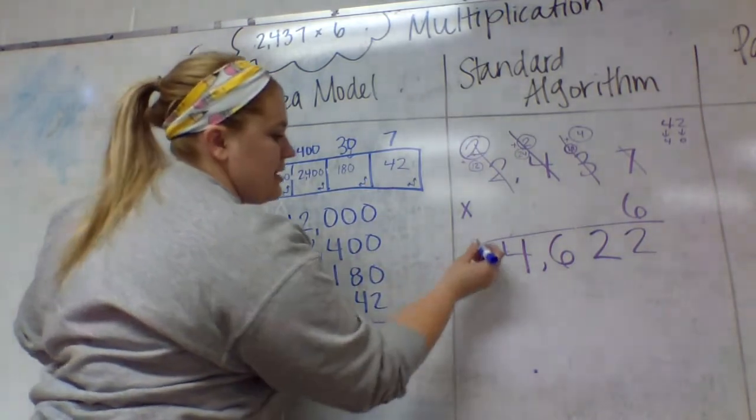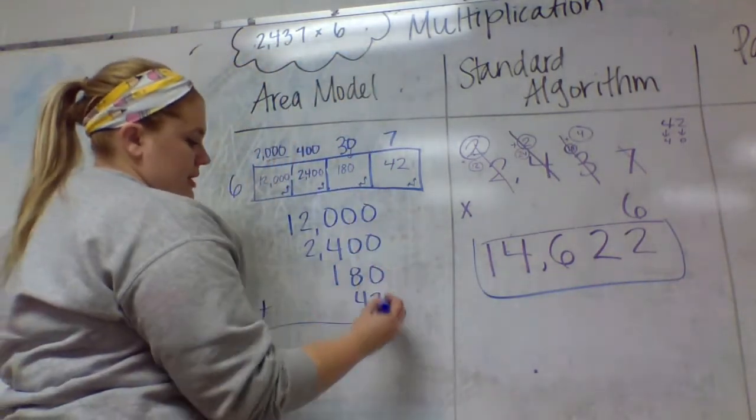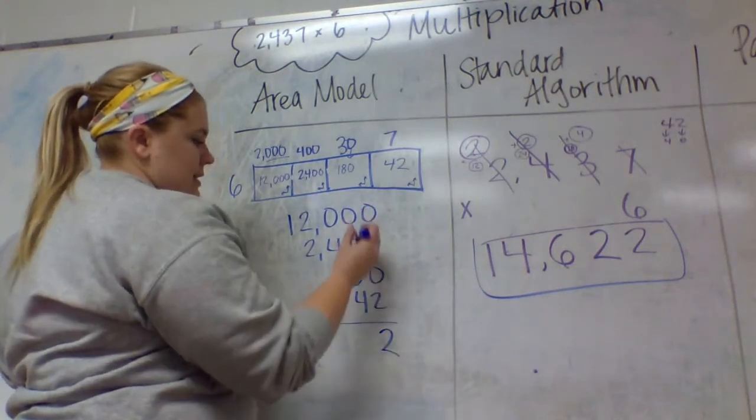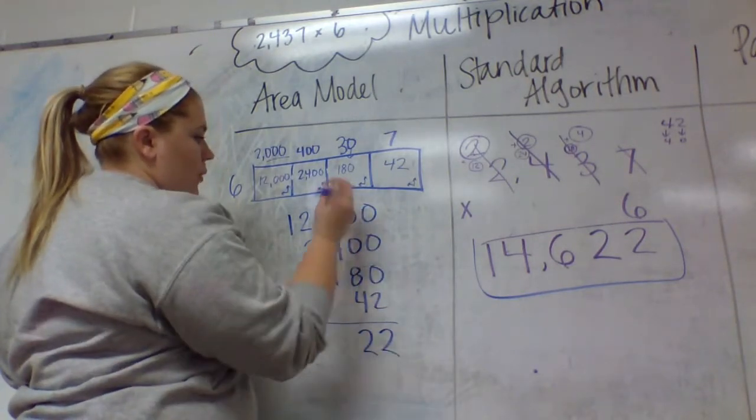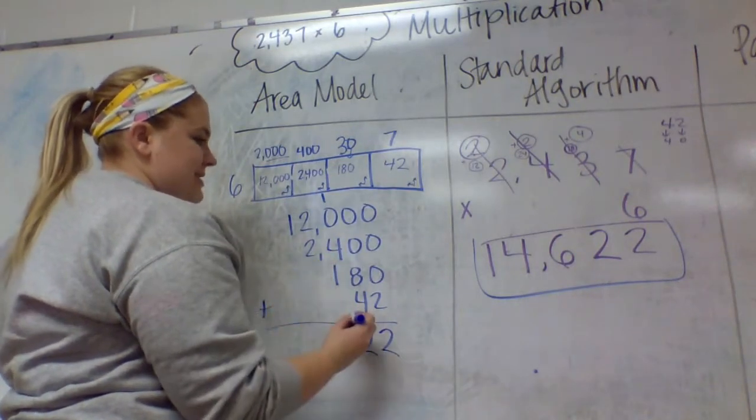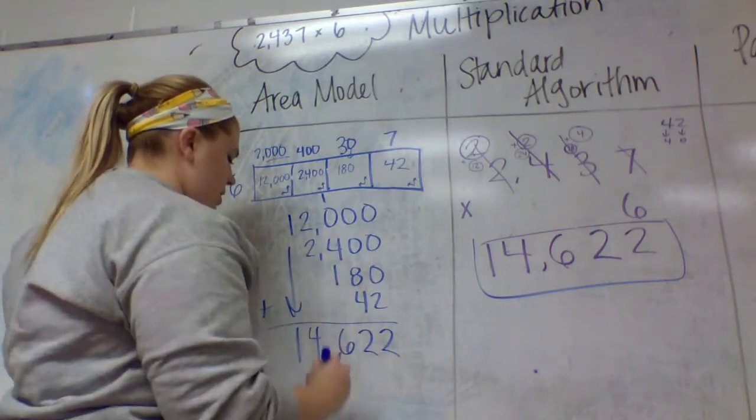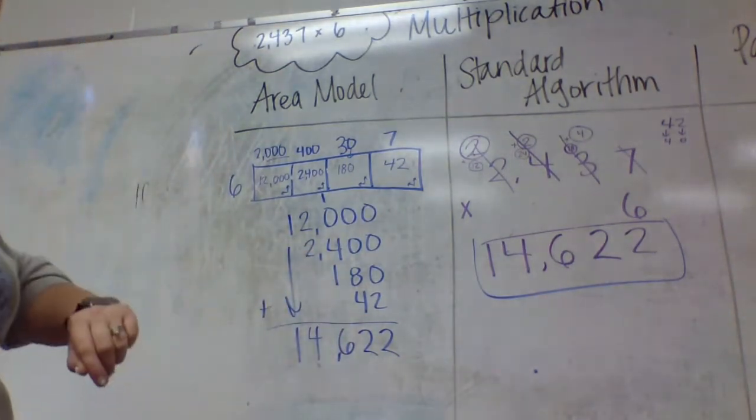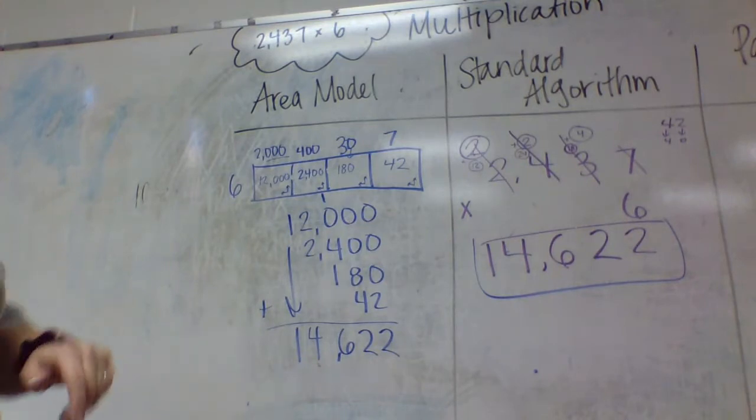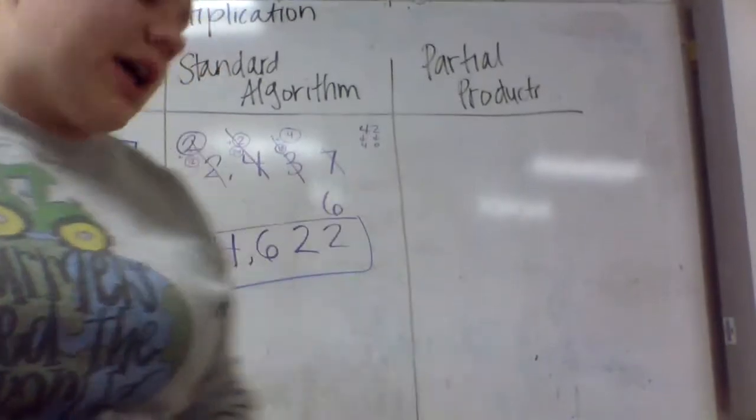My next step is to add each of these products up. And I know that this is the answer that I'm looking for. Zero plus zero plus zero plus two is two. Zero plus zero, eight plus four is twelve. Carry my one. One plus four is five. Five plus one is six. Two plus two is four. Bring down my one. Fourteen thousand six hundred twenty-two. So far, that's where we're at. We've got the same answer using two strategies.